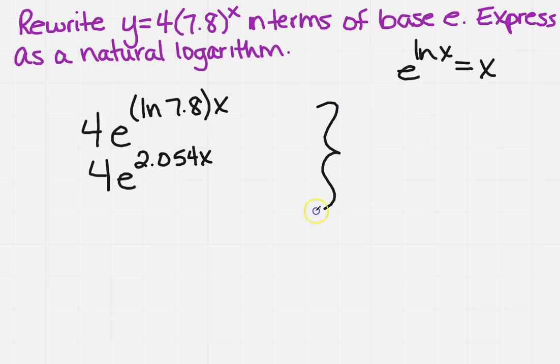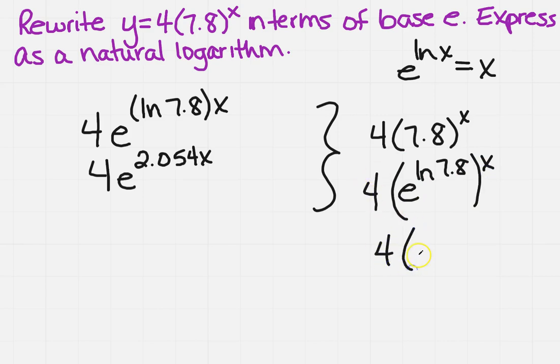Let me give you a little insight over here when I did this. Originally, I had 4 times 7.8 to the x. And so when I substituted in, I just substituted in for the 7.8, and I did that e to the ln of 7.8. So that whole thing was still to the x. So that's how my justification is for the e to that power. So it's going to be 4e to the ln of 7.8 times x.